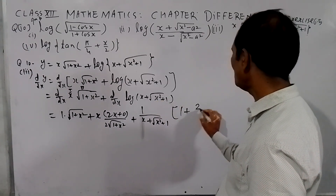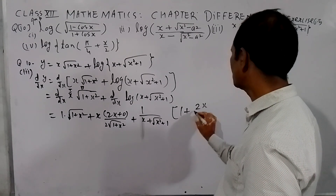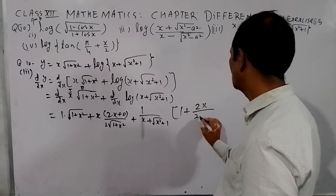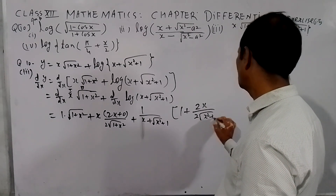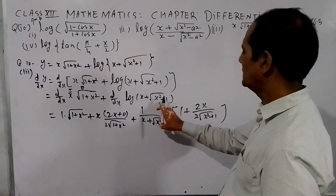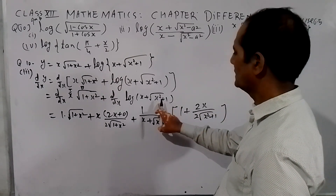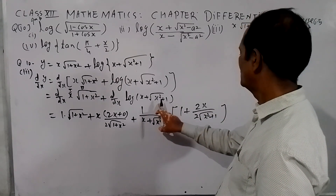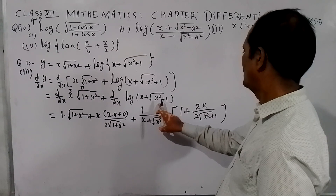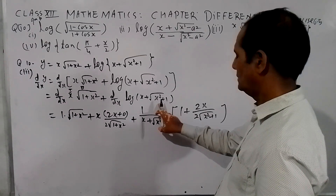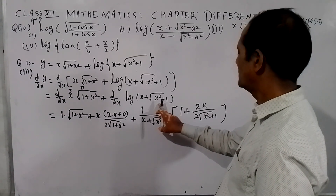Then, for the log term, d by dx of log t gives 1 by t, and the derivative of x square plus 1 gives 2x upon 2 root x square plus 1, which simplifies to 1 upon 2 root x square plus 1.